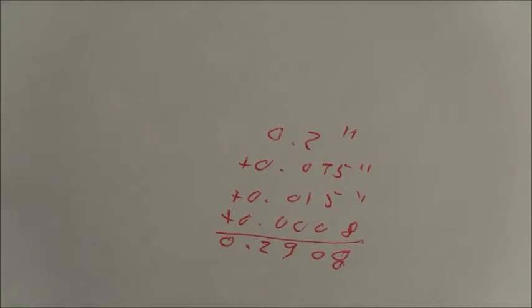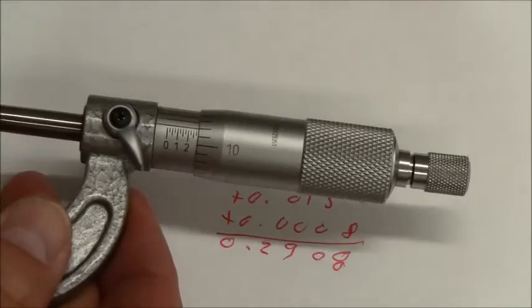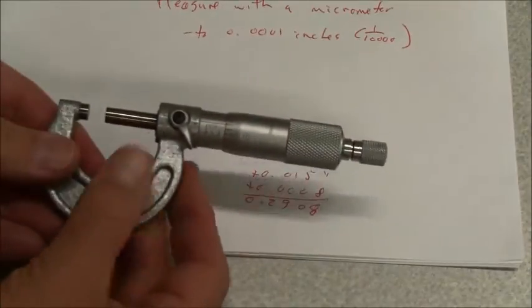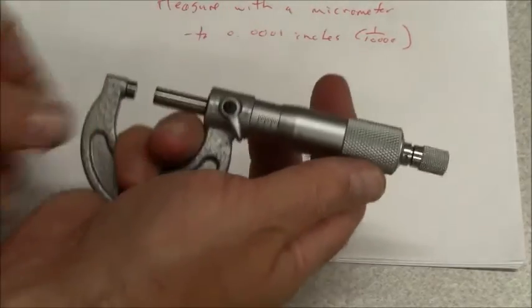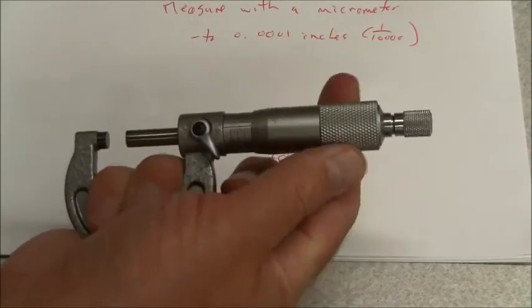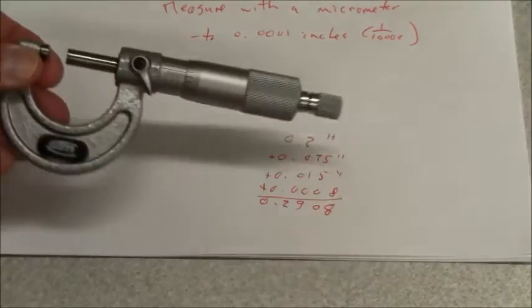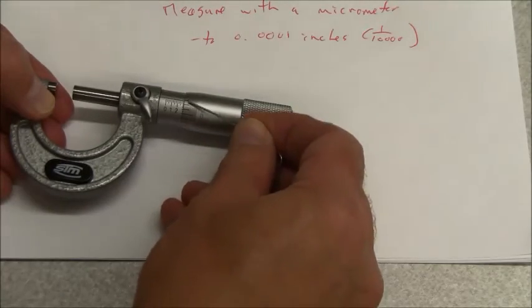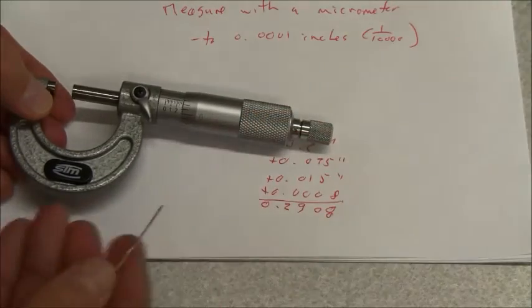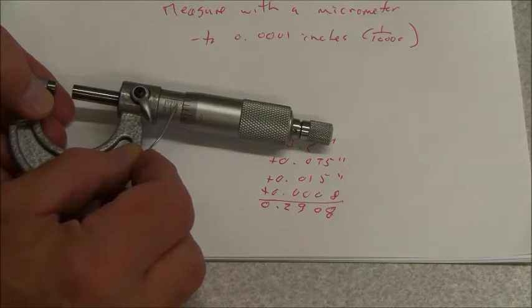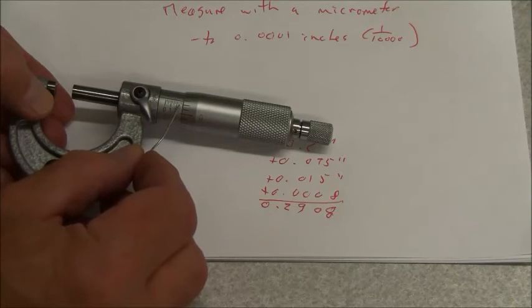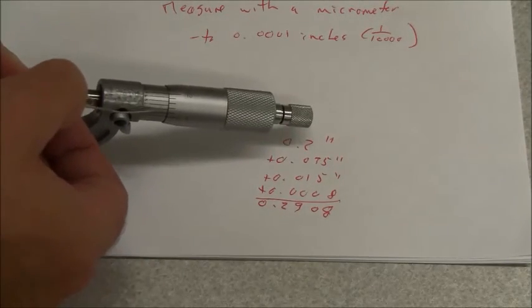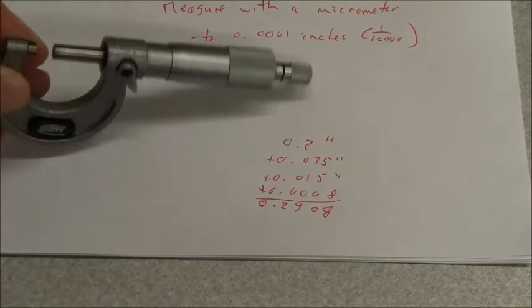So as a reminder, zero the device first. Spin it out to the measure you need, holding it in such a way that you can hold it with one hand to move in either direction. Snug it up. Then read your tenths, your thousandths. Also when you're reading your tenths, don't forget the .025, the .050, the .075s. Your thousandths. And then rotate until you find the matching lines to determine what your ten-thousandths is.